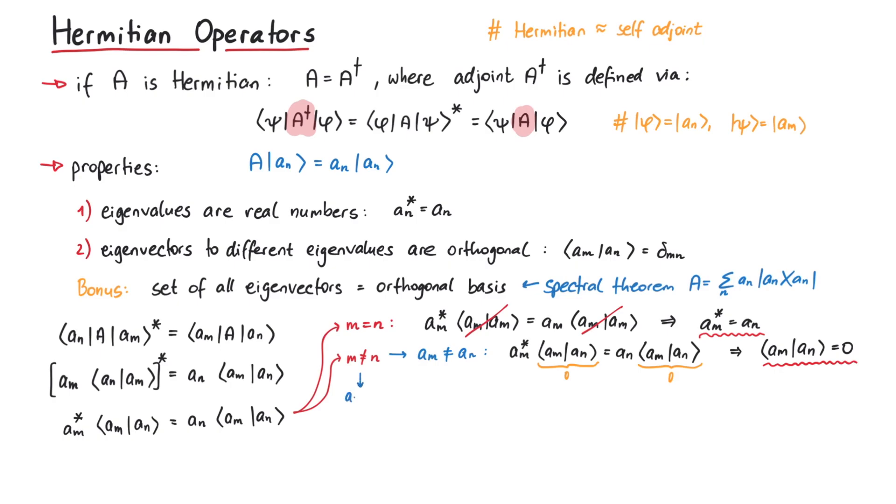In the second case, if the eigenvalues am and an are the same, even if the indices m and n are different, we can construct linear combinations of vectors, let's call them b1 and b2, which will turn out to be orthogonal.